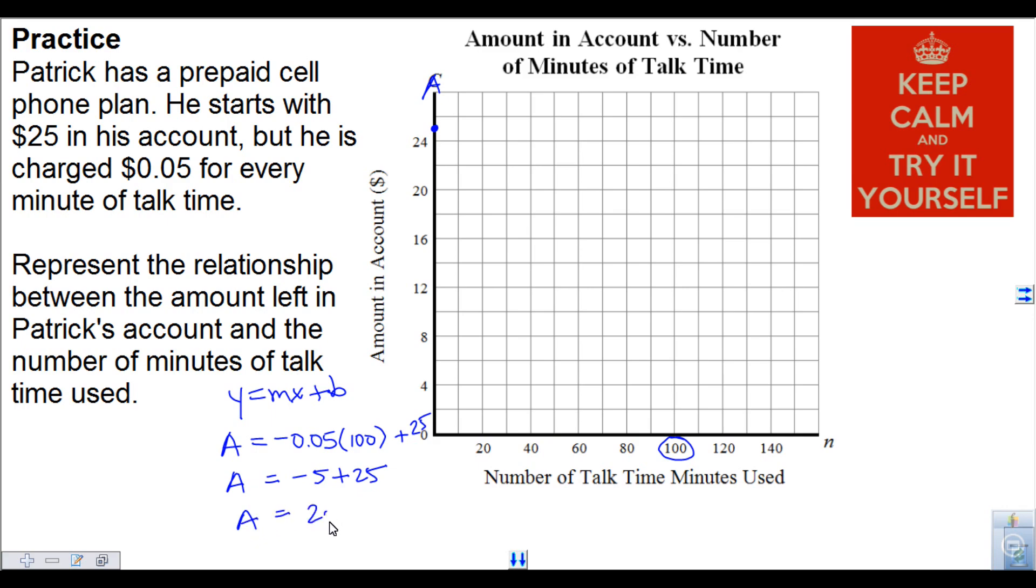So at 100 I could put a dot at 20. And again, two dots make a straight line. So we just connect the two and we have our graph.